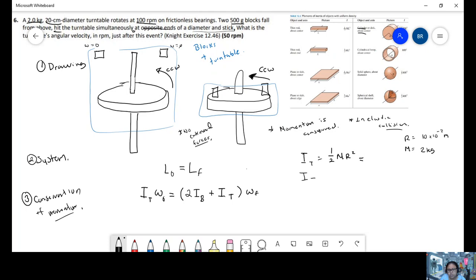Inertia of the turntable equals one half mass of 2 kilograms times the radius, so that's 10 times 10 to the minus 2 squared. And I'm going to get a value of 0.01 kilogram meter squared. That's our moment of inertia.